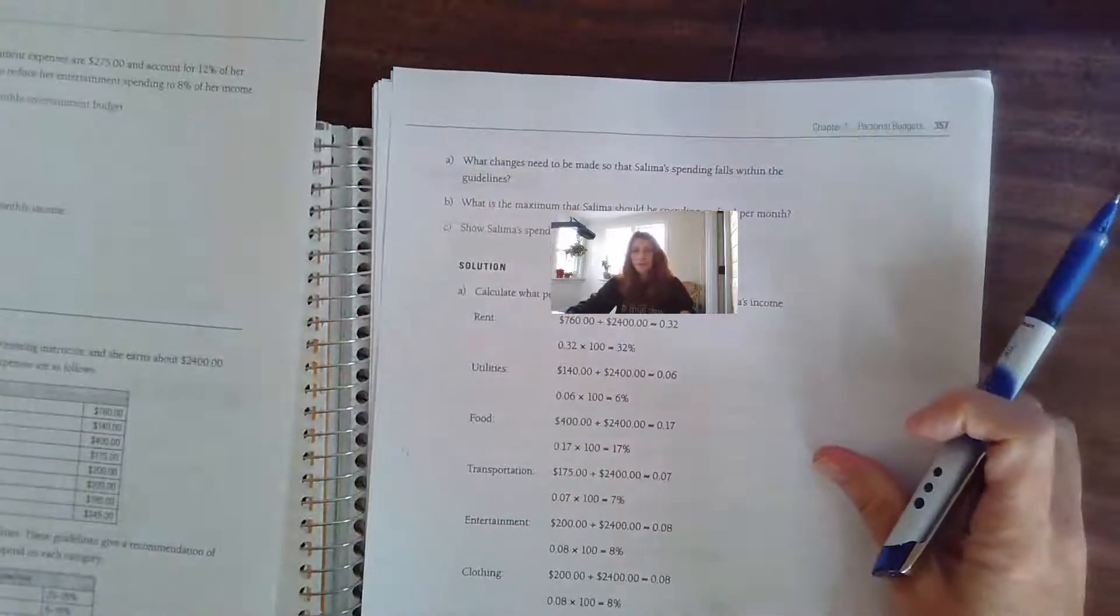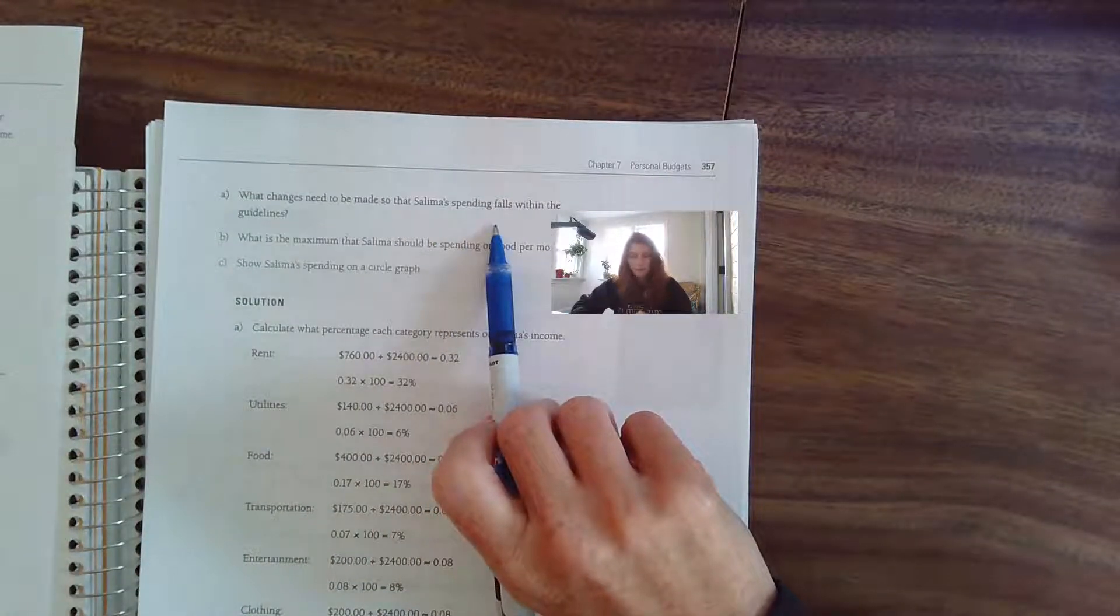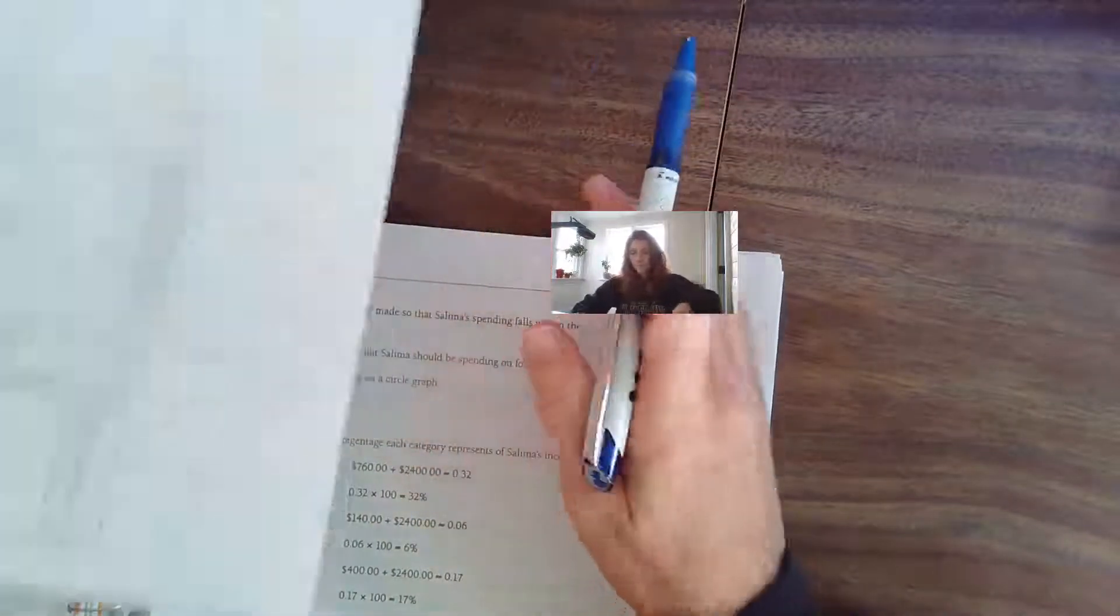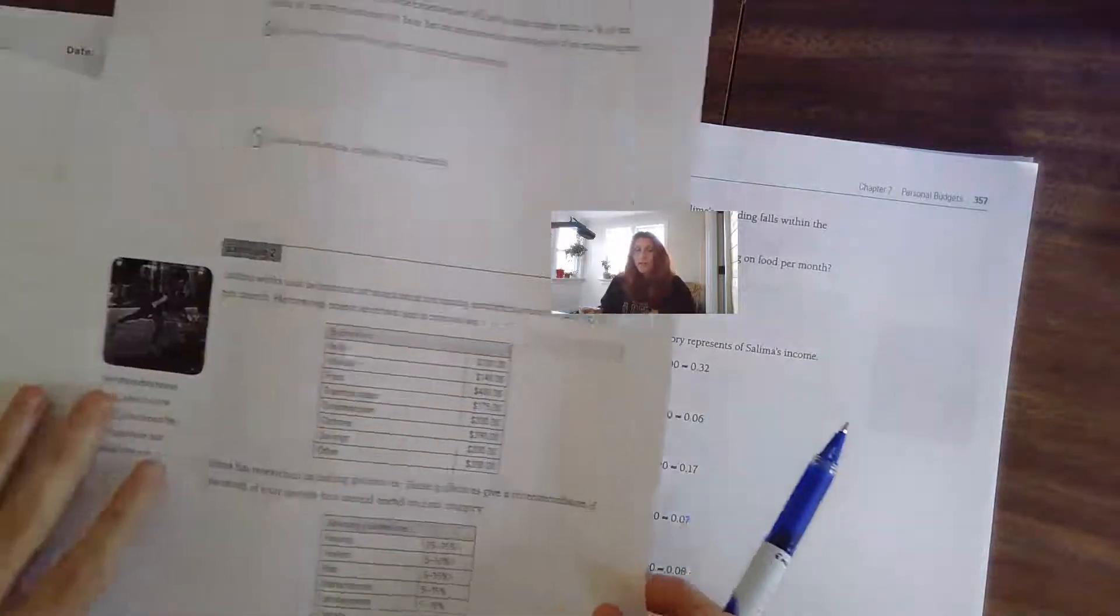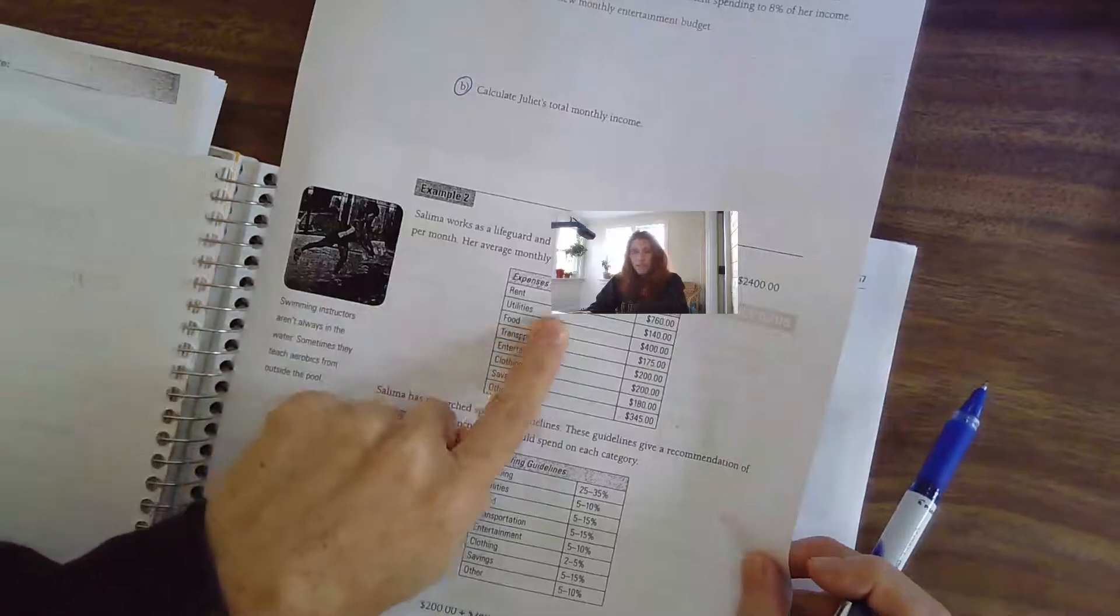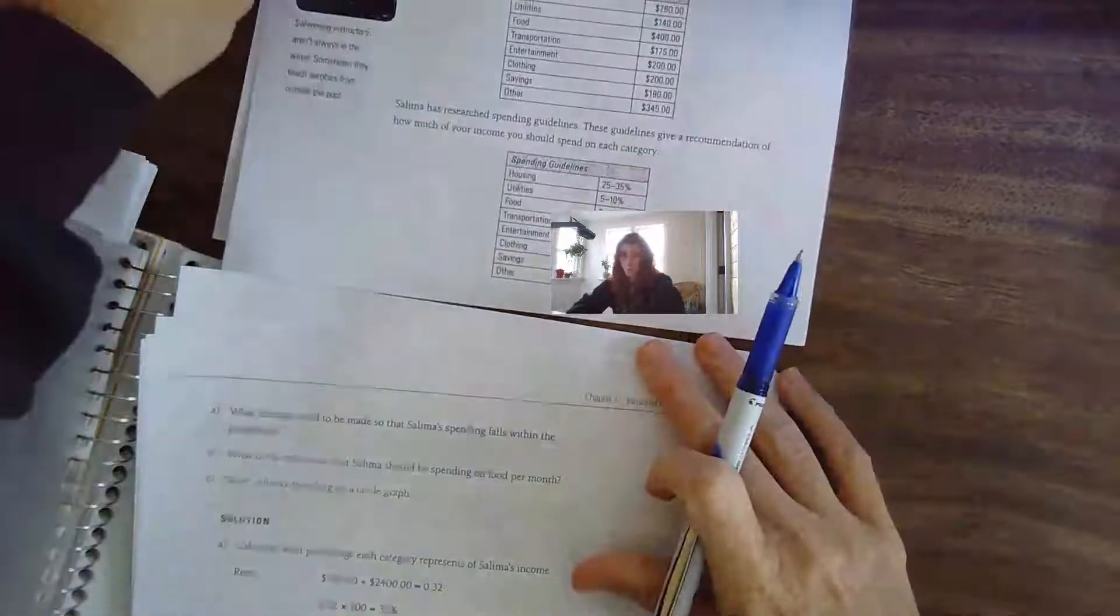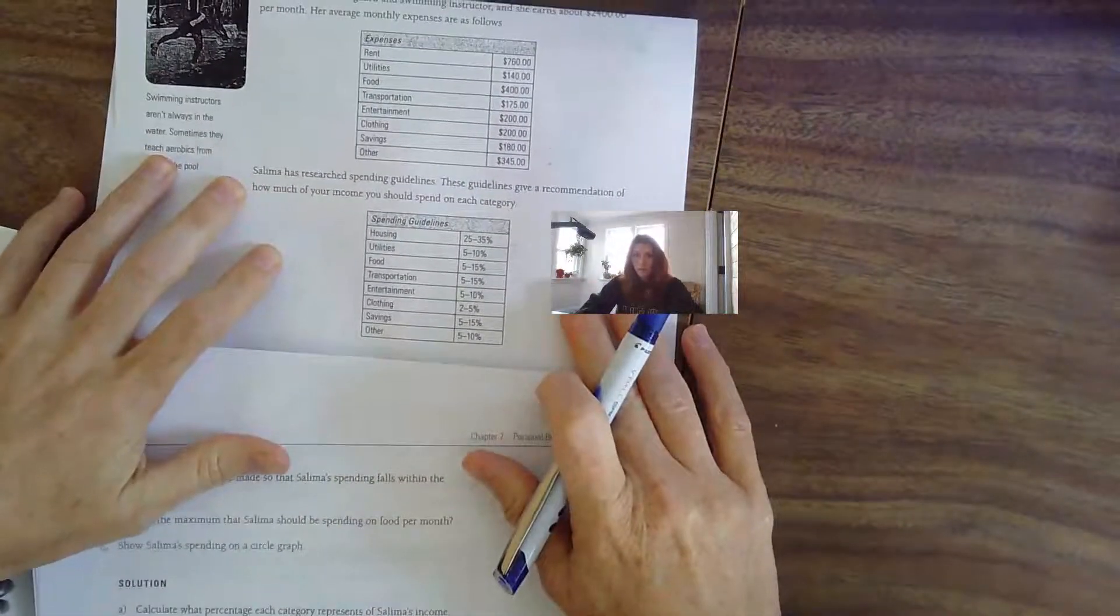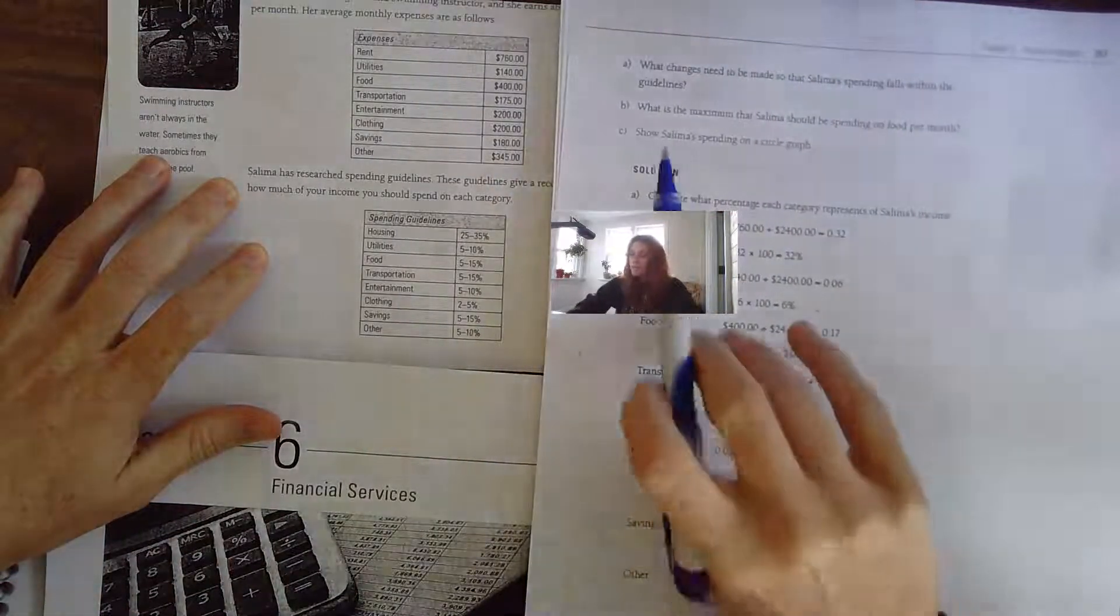The question is: what changes need to be made so that Salima's spending falls within the guidelines? So let's take a look. We're going to have to look at what she is spending and if it falls within these guidelines.